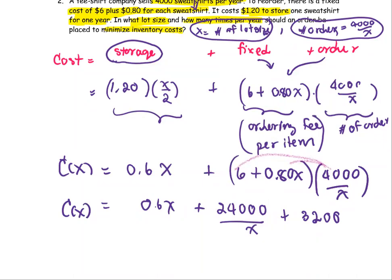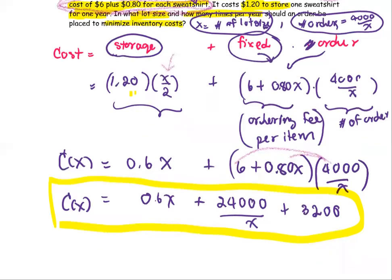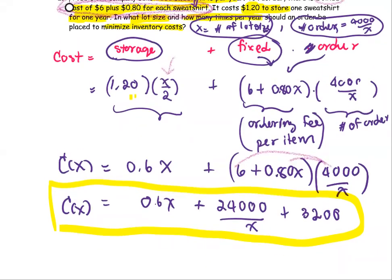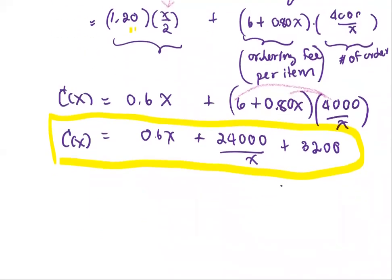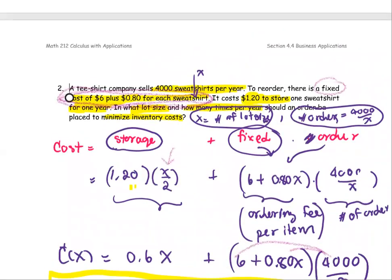I'll take a break here. Since the total in one year is going to be 4,000, that means X will be between one sweatshirt and 4,000 sweatshirts. The total is 4,000 sweatshirts per year.